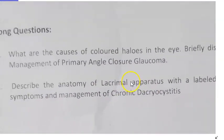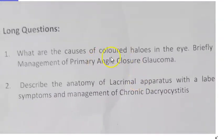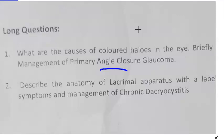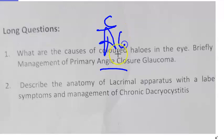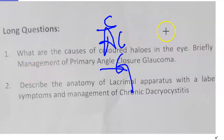Next, management of primary angle closure glaucoma — they're asking about signs, symptoms, and management. For angle closure glaucoma, you progress from a suspect, to angle closure, to glaucoma. To identify signs, you perform gonioscopy.